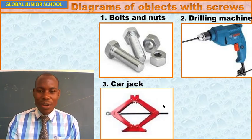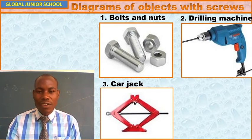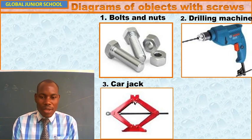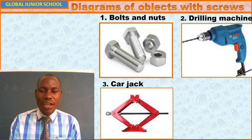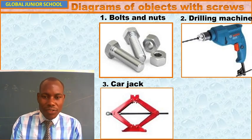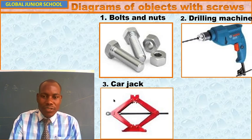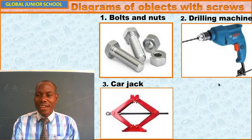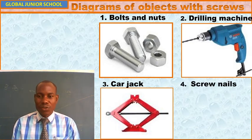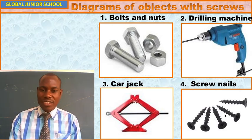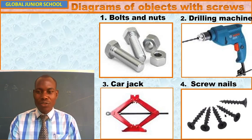We also have a car jack — this is what we call a car jack, also called a screw jack. It is used for lifting a car when you want to repair its bottom. It contains this part that you turn in order to tighten, and as you turn that, the other part moves upwards, enabling you to lift the car. We also have screw nails, which are commonly used to fasten parts of a radio, a watch, or a clock together.